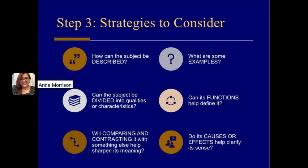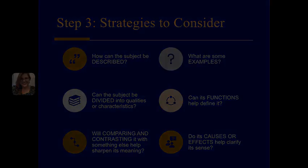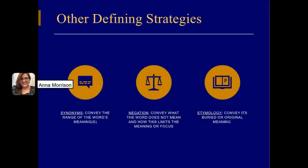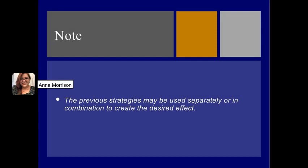Step 3 is strategies to consider. How can the subject be described? What are some examples? Can the subject be divided into qualities or characteristics? Can its functions help define it? Will comparing and contrasting it with something else help sharpen its meaning? Do its causes or effects help clarify its sense? Other defining strategies include synonyms — to convey the range of the word's meanings; negation — to convey what the word does not mean; and etymology — to convey its varied or original meaning. Note that these strategies may be used separately or in combination.